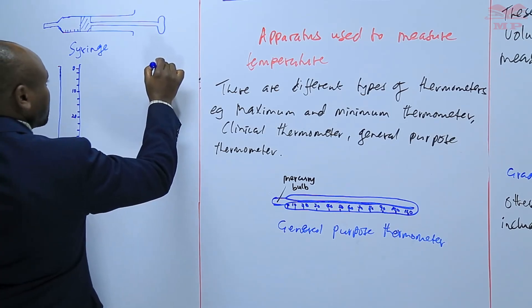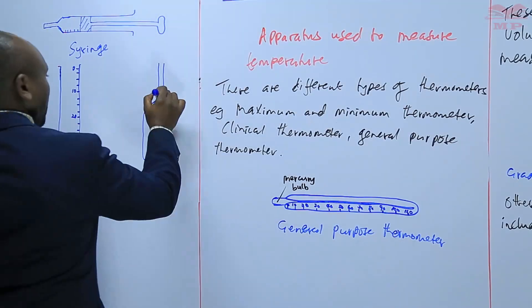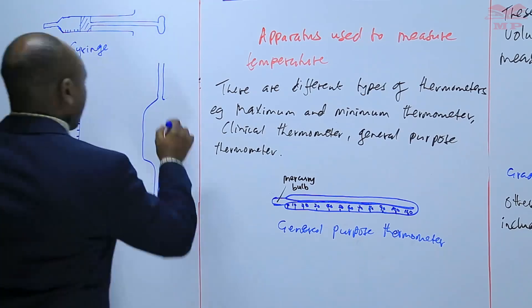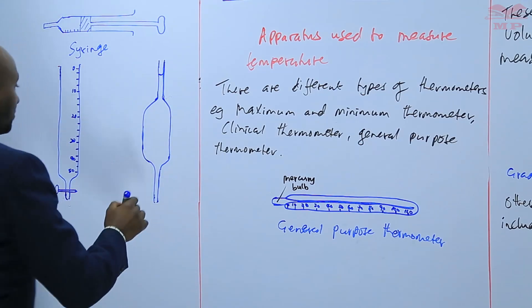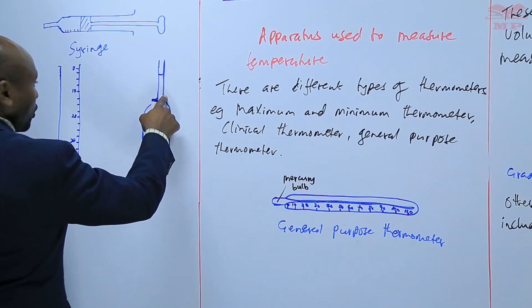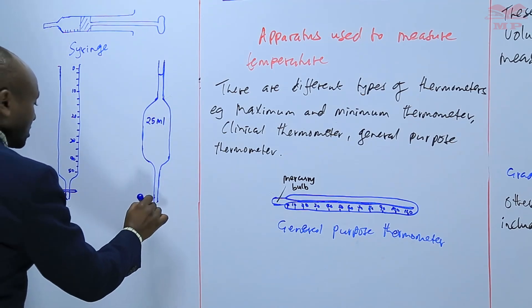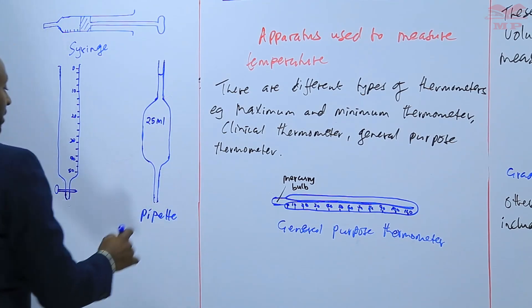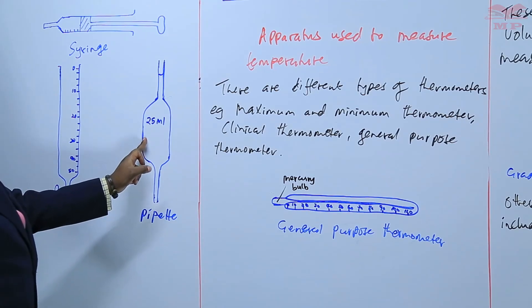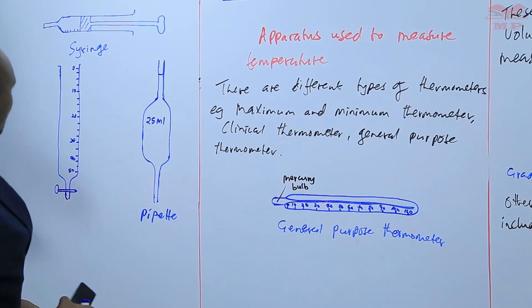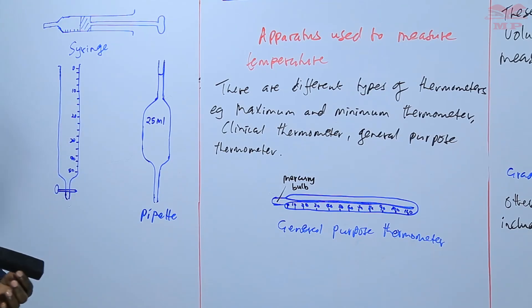Then we have the pipette. A pipette measures a certain specific volume. For example, we have the 25 milliliters pipette, that's the most common. So the pipette, if you measure a liquid or a solution up to this mark, that shows that you have exactly 25 milliliters or 25 cubic centimeters. So basically, these are some of the apparatus that we use to measure volume.